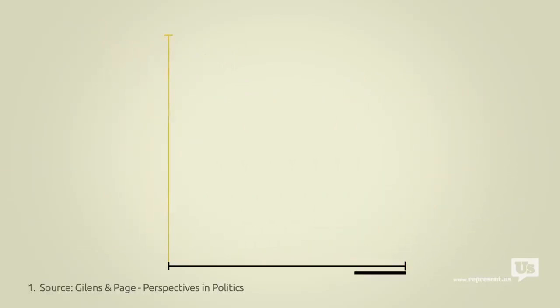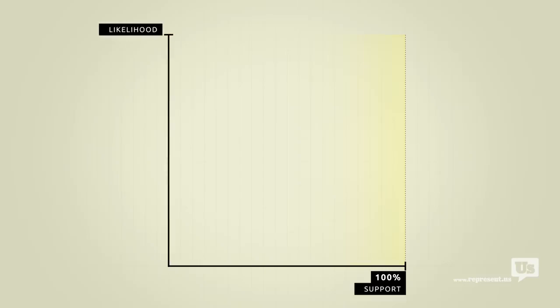This axis here represents public support for any given idea. On the left at 0% are ideas that not a single American wants. On the right at 100% are ideas that everyone supports. This axis represents the likelihood of Congress passing a law that reflects any of these ideas, from a 0 to a 100% chance.